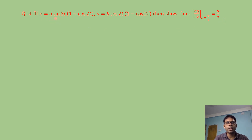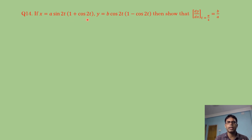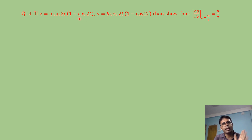Before differentiating x directly, we simplify the expression first. Although you can apply the product rule directly with sin2t and (1+cos2t) as the two functions, simplification makes differentiation easier.